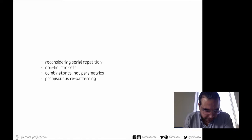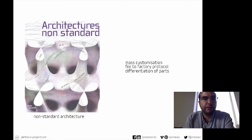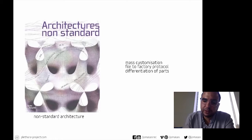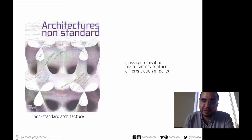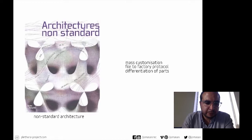For me, everything really started with the architectural non-standard, which really refers in other terms to what we call today parametrics. This is where Frederic Migayrou's exhibition done at Centre Pompidou really celebrated the idea of mass customization — really moving away from industrial revolution and the serialized repetition of parts, more towards mass customization, file-to-factory protocols, and differentiation of parts in order to achieve a more bespoke outcome in architecture.